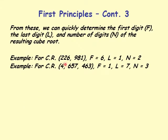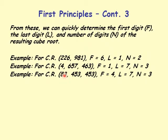For cube root of 4,657,463: the first digit of the cube root is 1, because 4 is between 1 cubed (1) and 2 cubed (8). Since the number ends in 3, and when a digit ends in 3 its cube root ends in 7, the last digit is 7. The number of digits in the cube root is 3. For cube root of 83,453: the first digit is 4, because 83 is between 64 and 125. The last digit is 7 (from the ending 3), and the number of digits is 3.